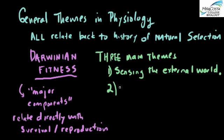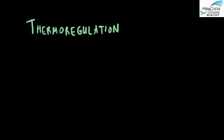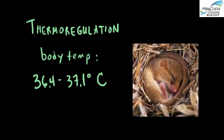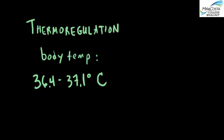A second general class of physiological functionality is homeostasis—the maintenance of a relatively stable internal environment despite fluctuations in external conditions. The most obvious example is thermoregulation in a warm-blooded animal like yourself. Your body temperature remains within a narrow range between 36.4 and 37.1 degrees Celsius. Unless you're running a fever or hibernating or dead, your internal temperature stays in this range irrespective of the outside temperature.